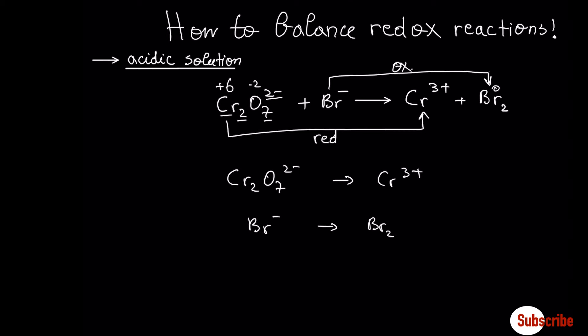We have to balance the main atoms first — everything except oxygens and hydrogens. In this case we need a two here and two here. Now let's balance the oxygens. From the first half reaction we need seven oxygens on the right side, so we add seven molecules of water. On the left side we add hydrogen plus ions to balance the hydrogens. The second half reaction is already balanced.